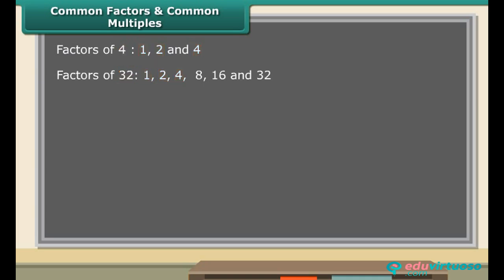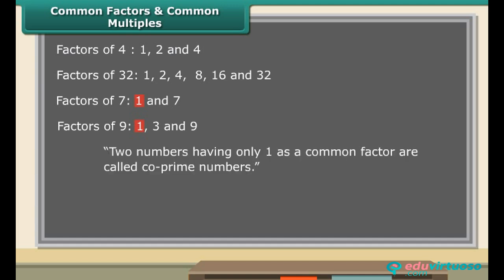Consider the numbers 7 and 9. The factors of 7 are 1 and 7. The factors of 9 are 1, 3 and 9. 1 is the only common factor between 7 and 9. Therefore 7 and 9 are co-prime numbers. If two numbers have only 1 as the common factor, they are called co-prime numbers.